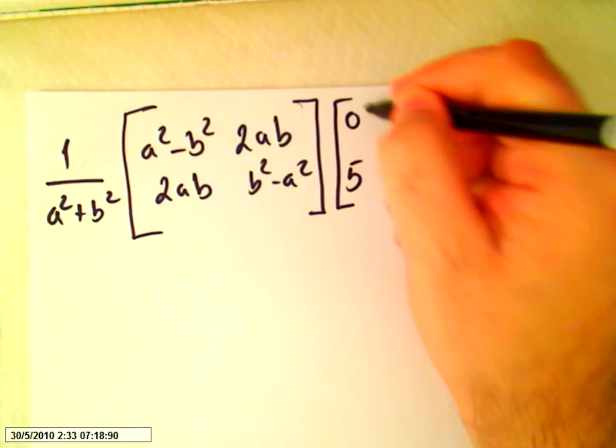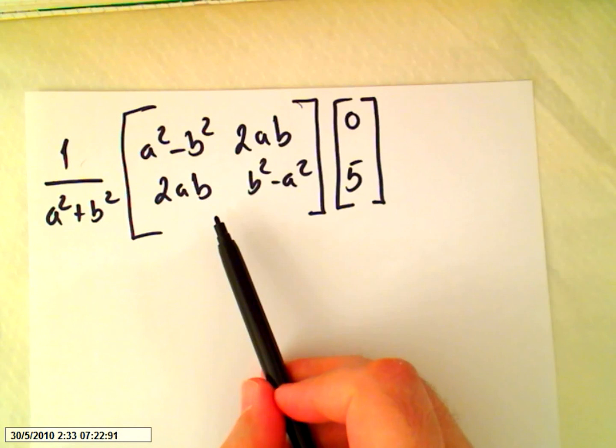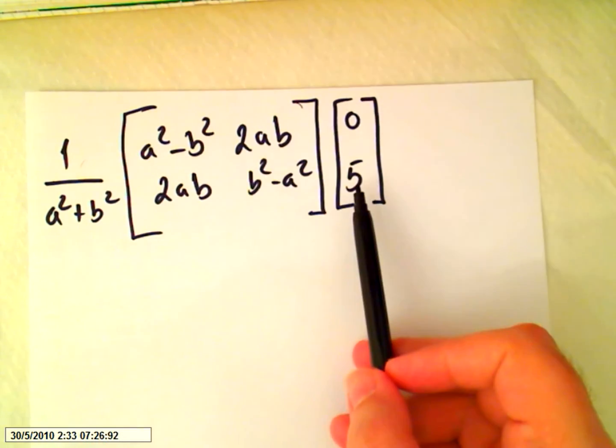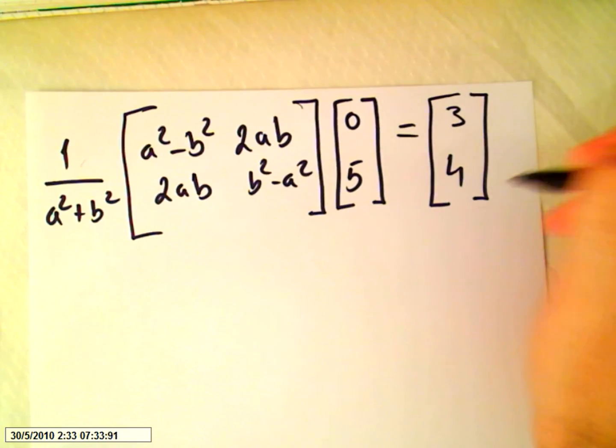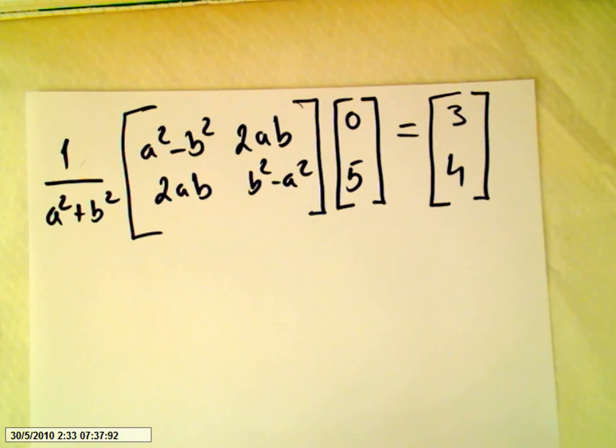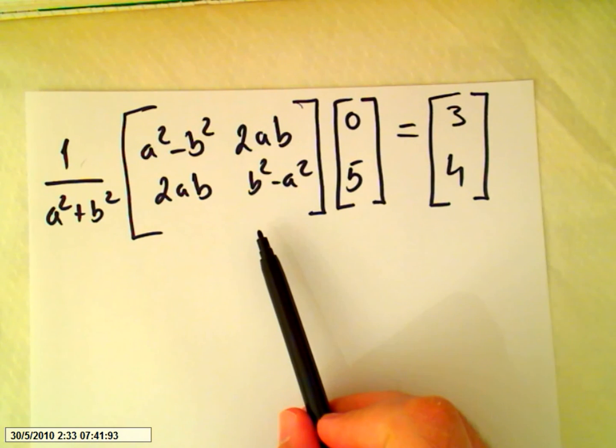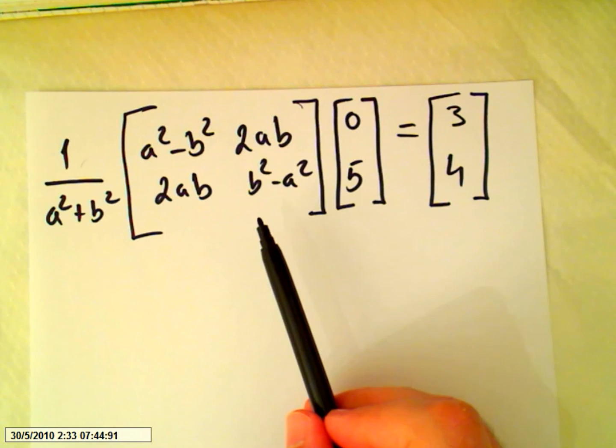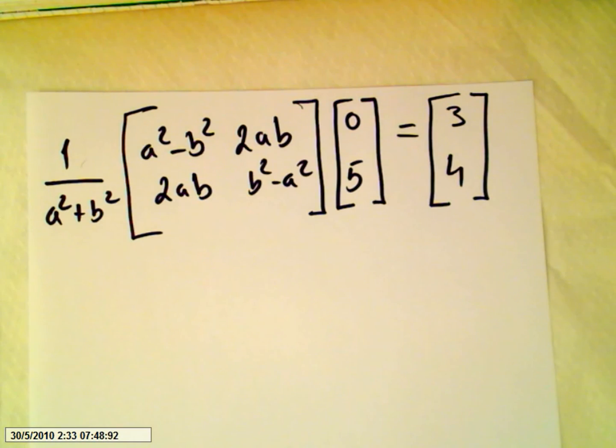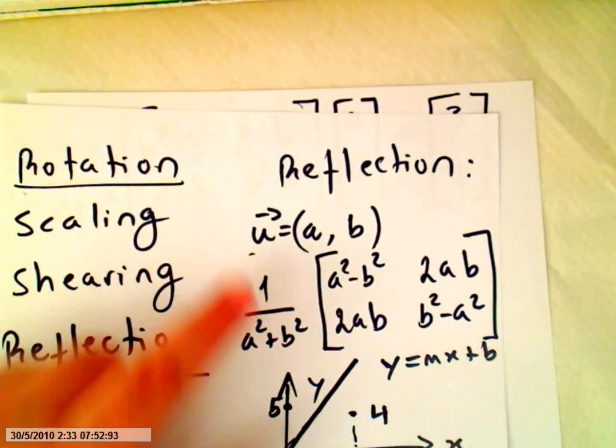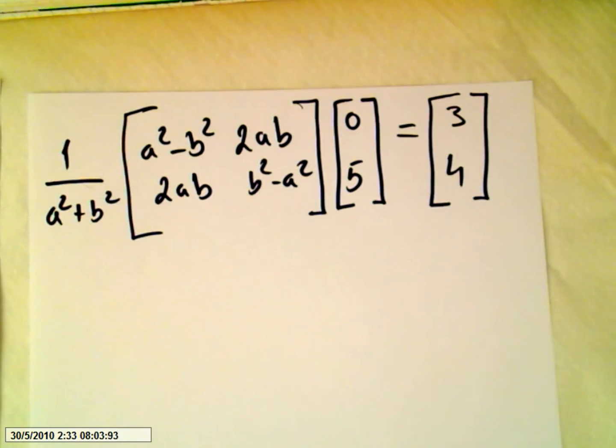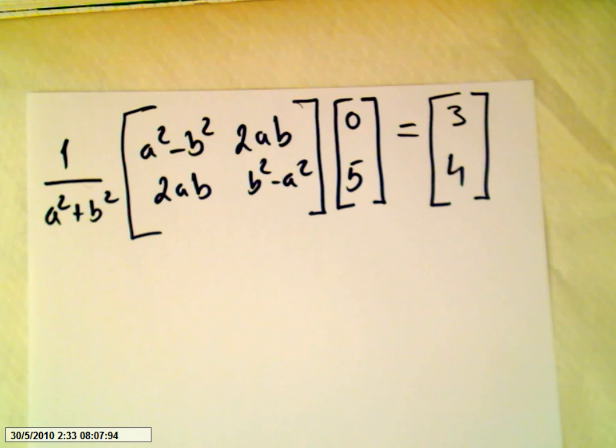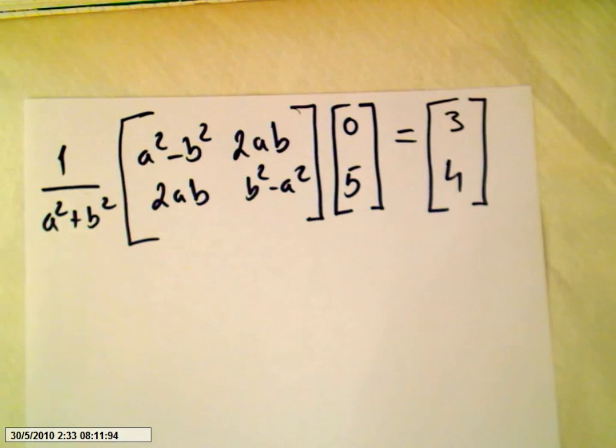So I'm going to apply the matrix to the point (0,5), and I will get (3,4). So doing all these calculations, in the end we will find a and b. And a and b will be the vector, the vector that directs this line here. This line will be moving a and b. Now these calculations are quite easy, and I will do it anyway.